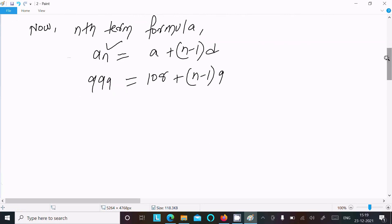n minus 1, and the d value is 9. Solve and you can get the value of n. Moving terms to the left: 999 minus 108 equals (n-1) times 9. 999 minus 108 is 891.